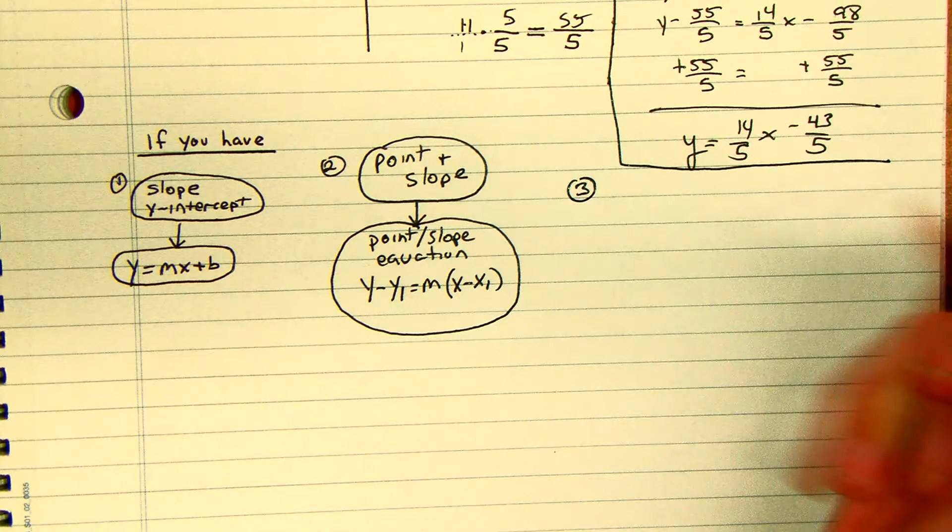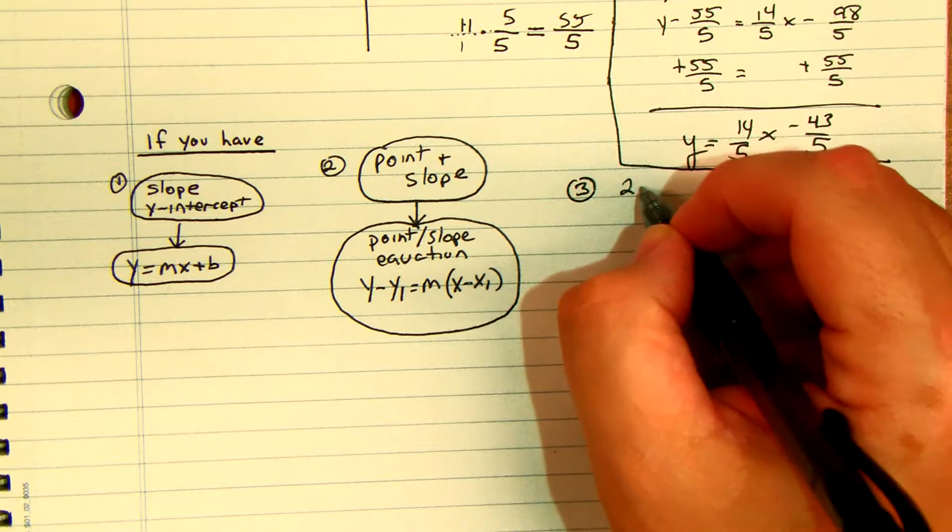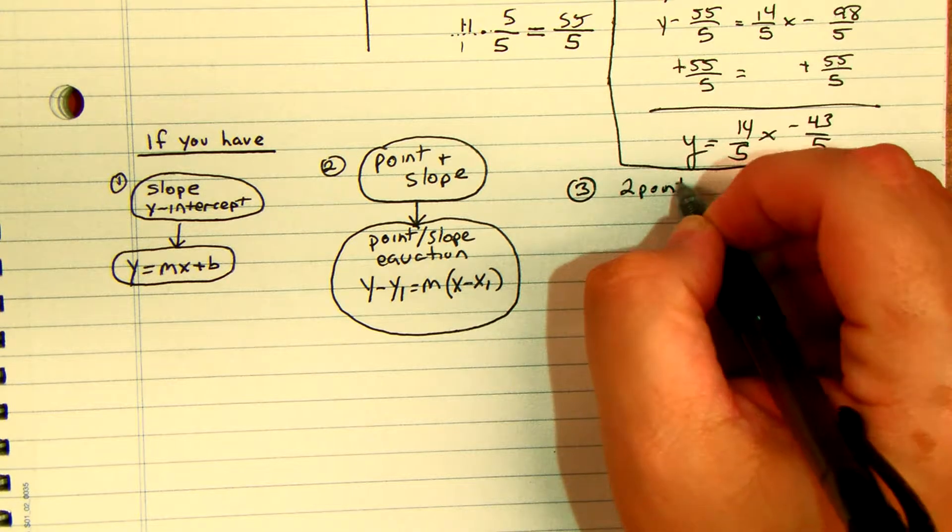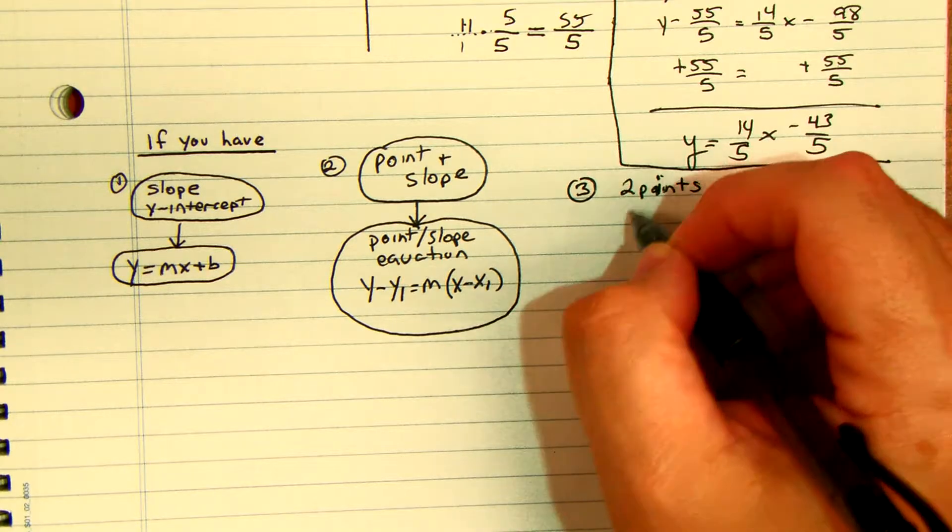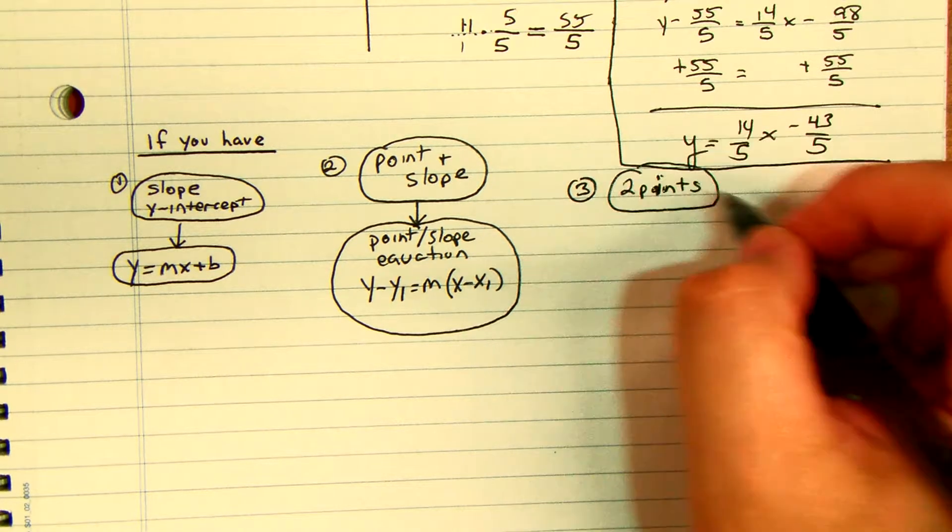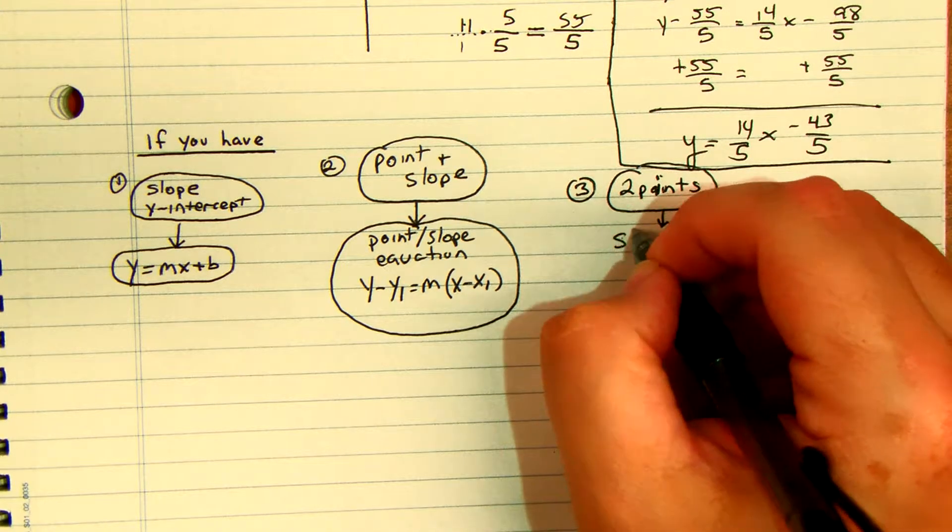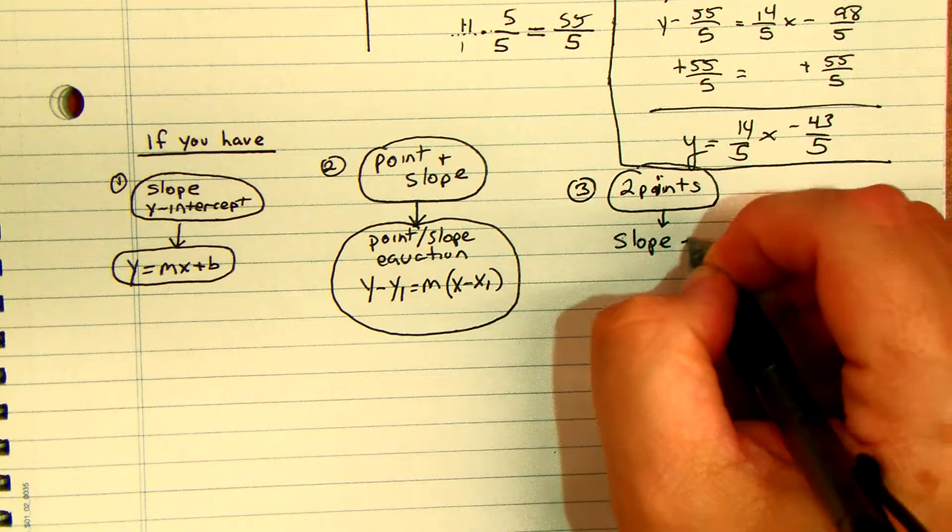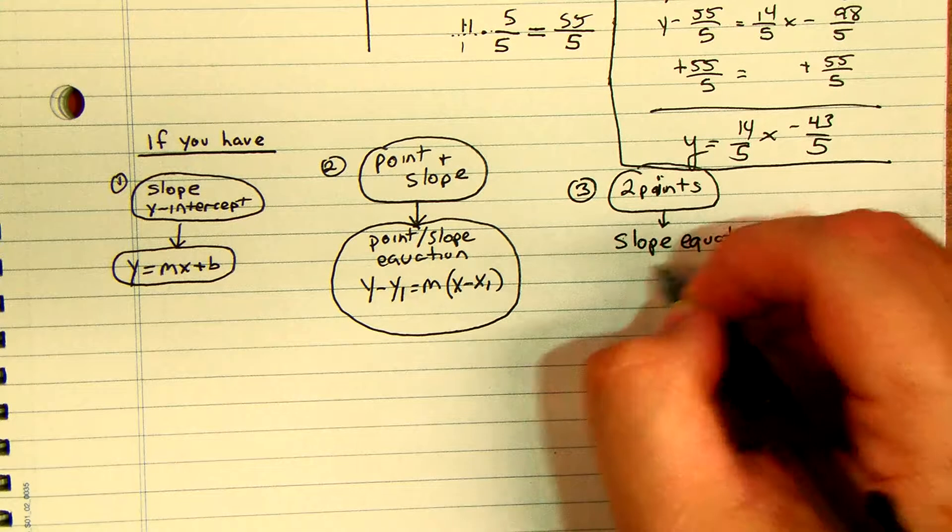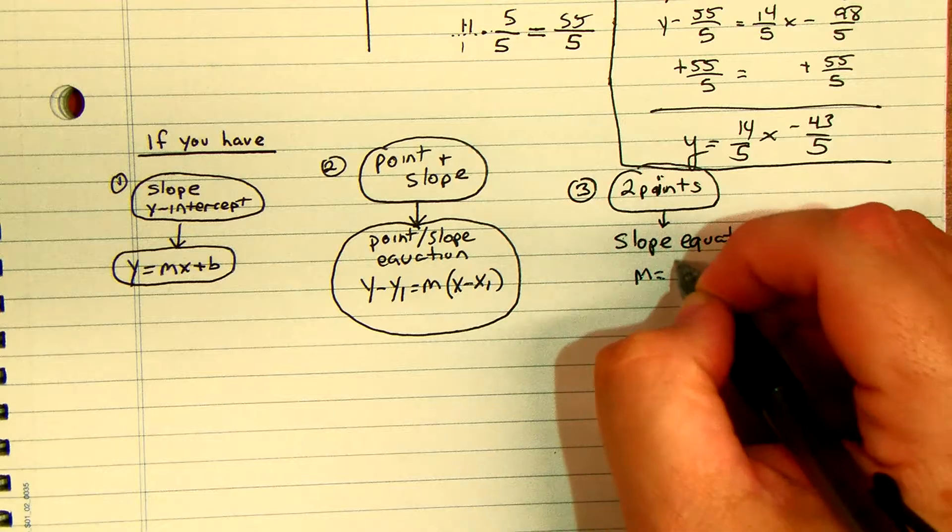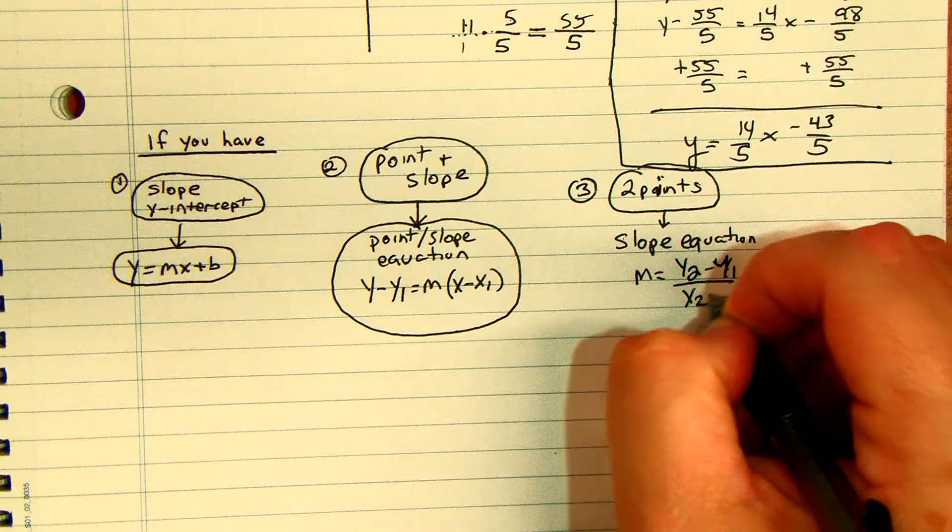And for your third one, if you have two points, if you start with two points, here's what you're going to do first. You're going to go with the slope equation, which is m is equal to y2 minus y1 over x2 minus x1.